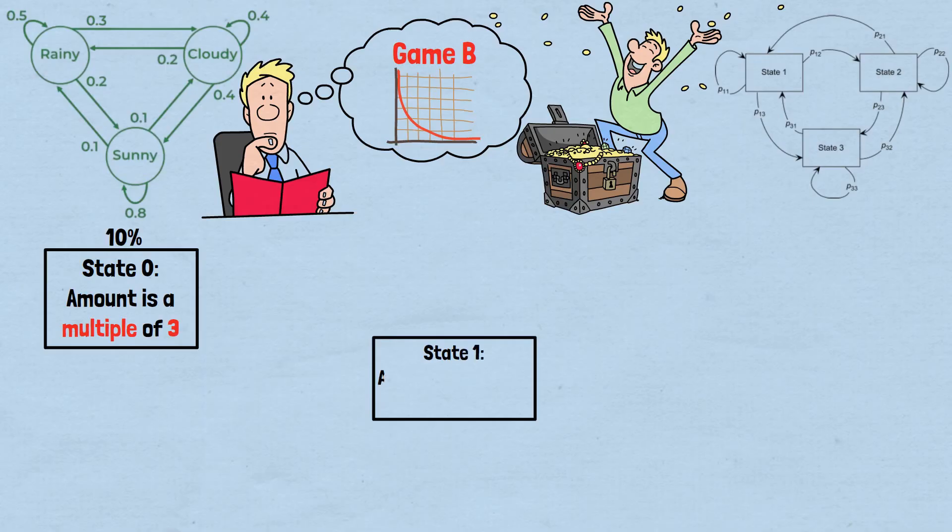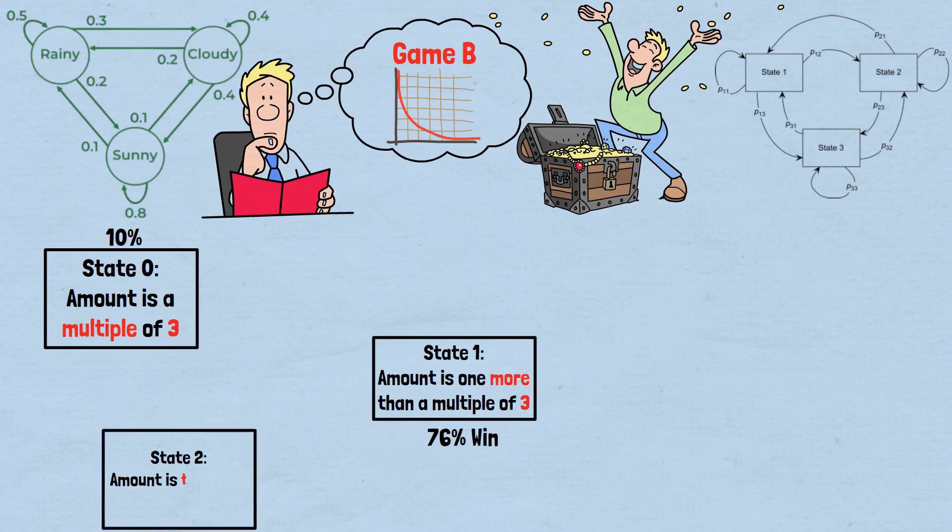The crucial insight is that these states don't have equal probability. The transitions between states caused by winning or losing each game create an uneven distribution where you spend more time in state zero, forced to play the terrible B1, than the simple one-third you might expect.